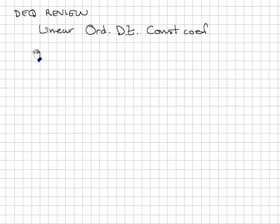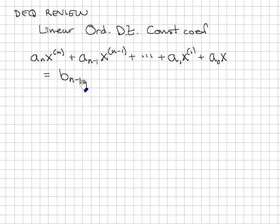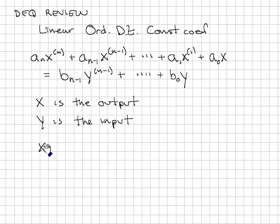A differential equation of this type can be written like this: a_n x^(n) plus a_(n-1) x^(n-1) and so on equals b_(n-1) y. In this system, x is the output, y is the input. The notation x^(n) is shorthand for the nth derivative of x with respect to time. Same thing for the y derivatives.